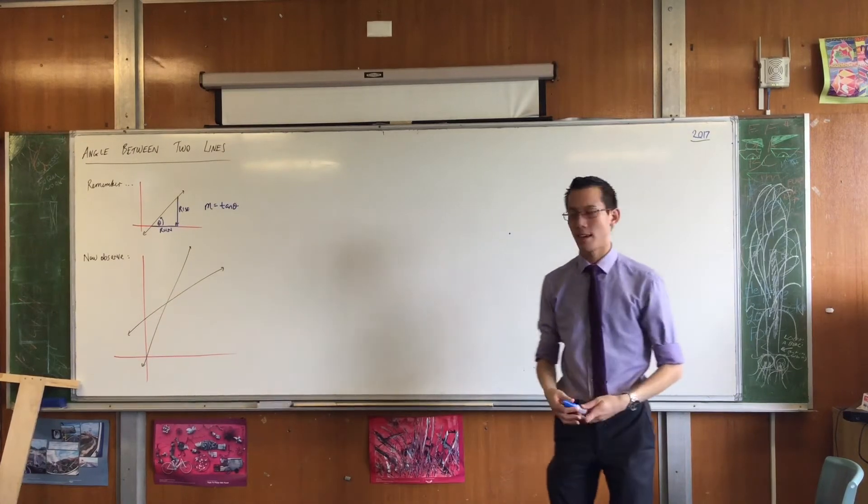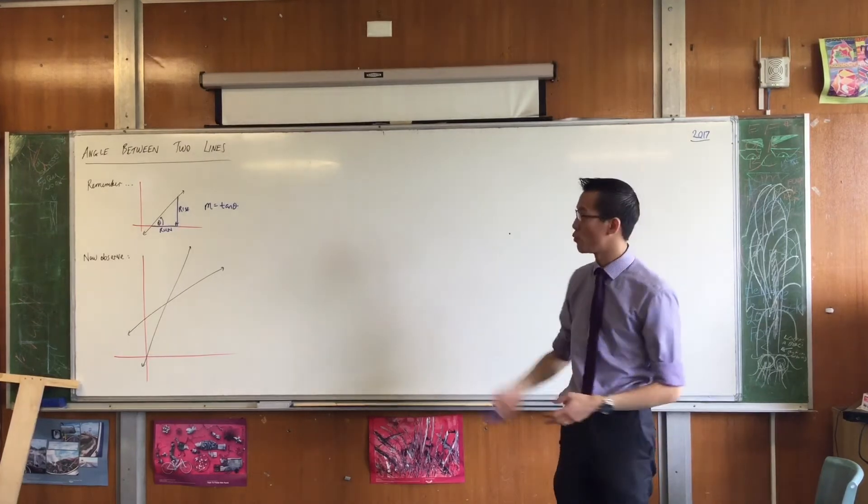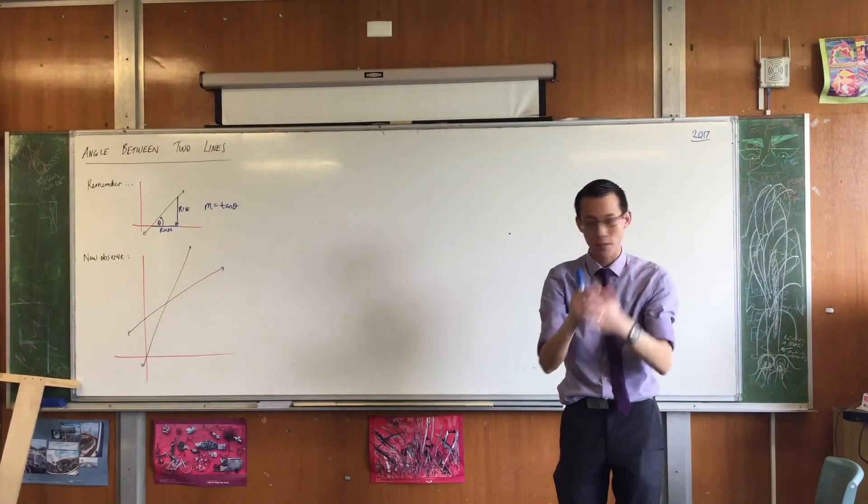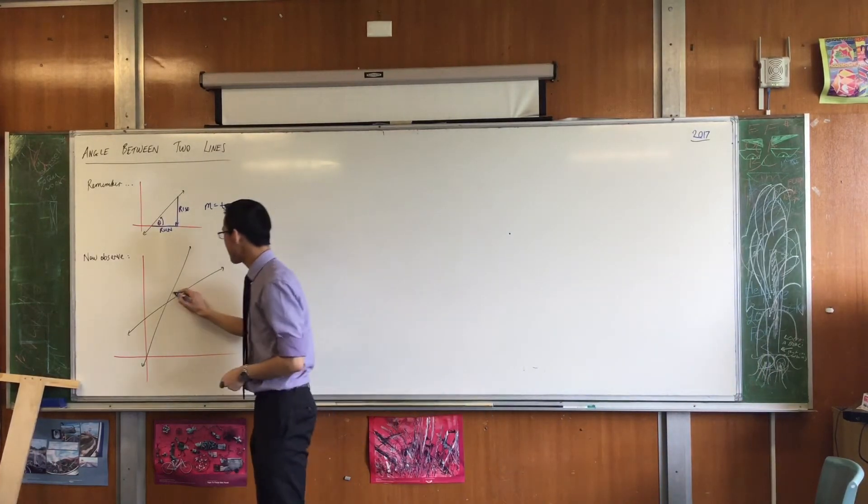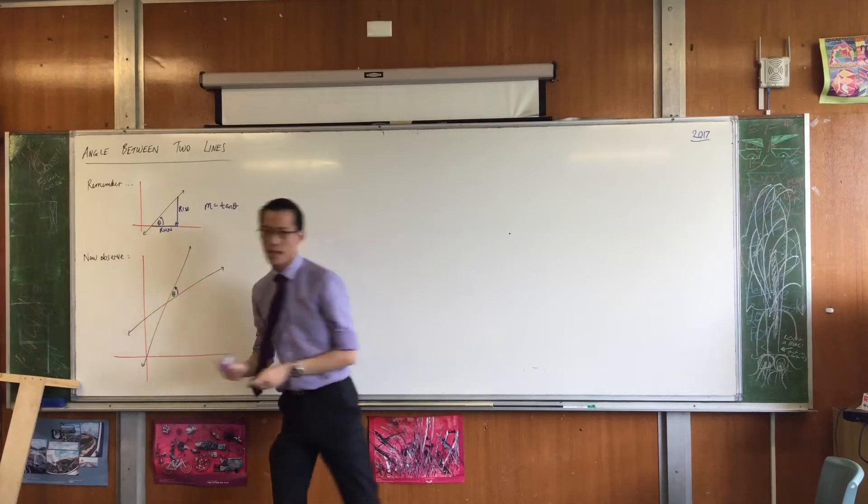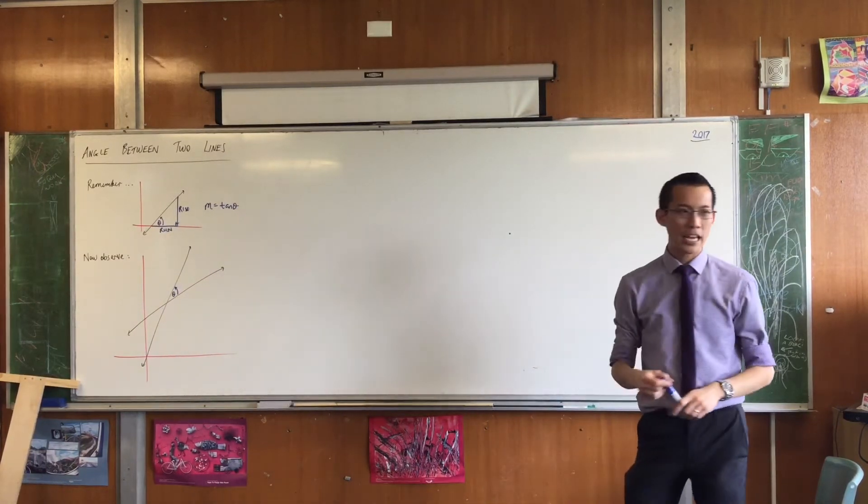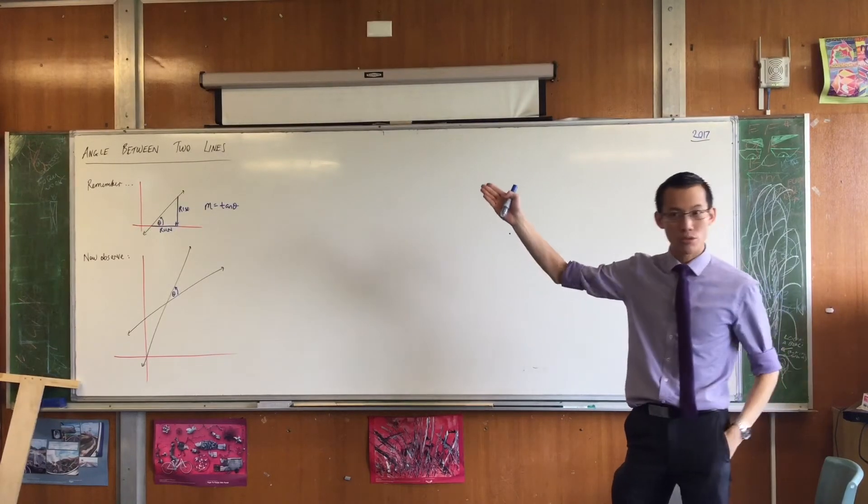So now we're going to extend it and say, if you don't want the angle with the axis, but if you want the angle between two lines that are off at funny angles, each of them, like these two. How do you work that out? So here's what I'm after. This theta here. So to help me work this out, what I'm going to do is compare this problem to the problem that you just solved.